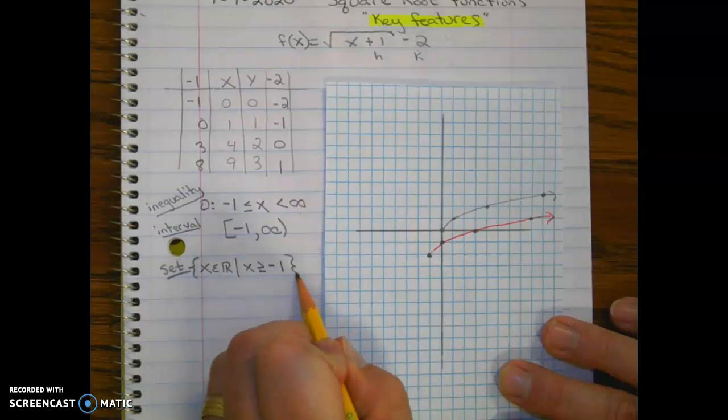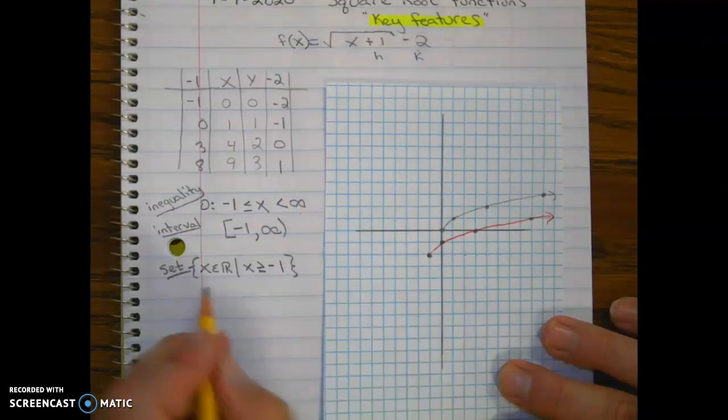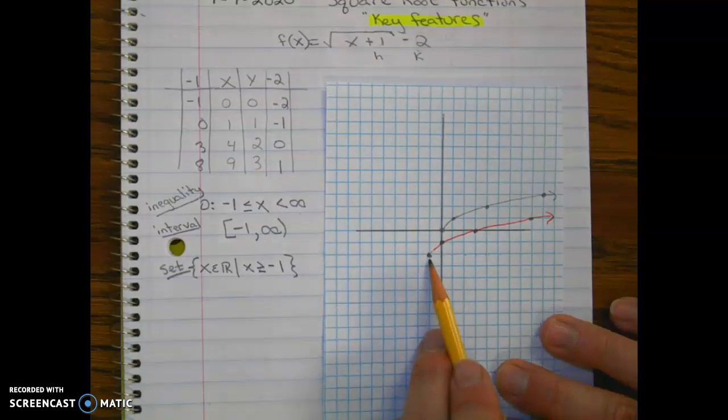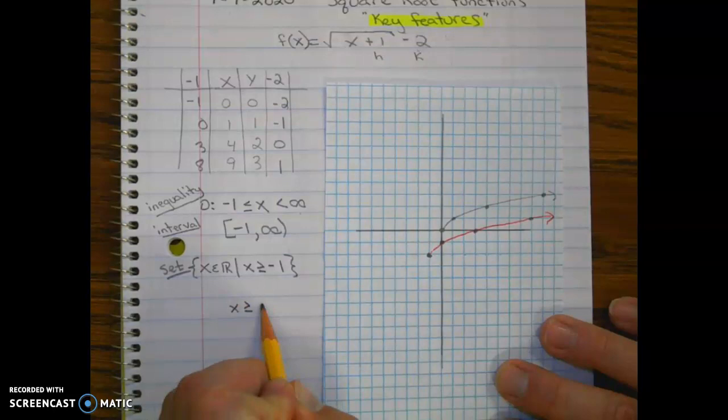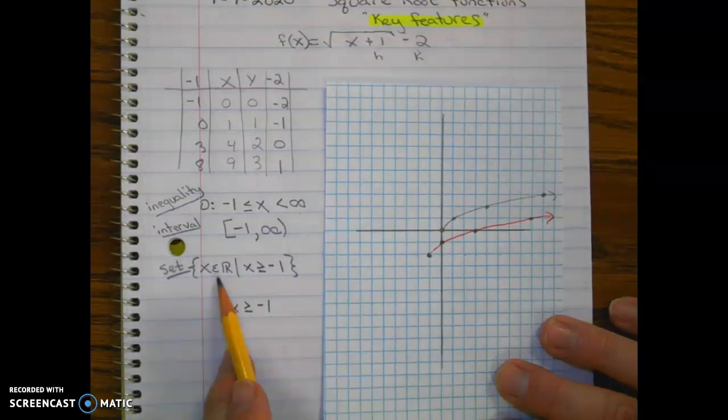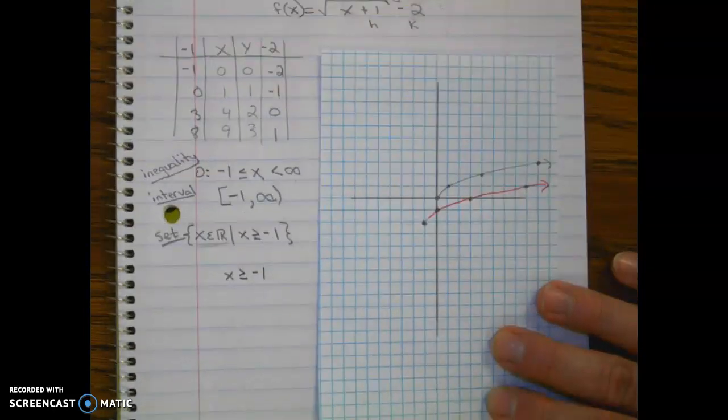Now sometimes you'll see the domain for a square root function just simply written like this, with the assumption that x is all real numbers. Okay, let's take a look at the range next.